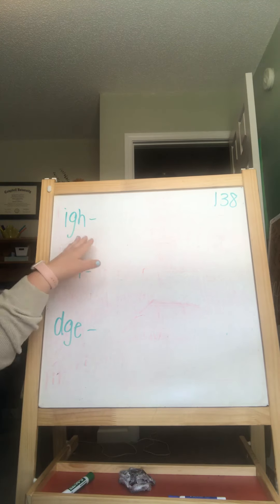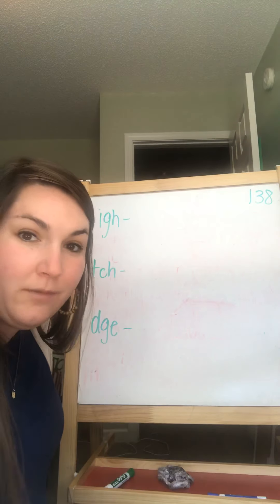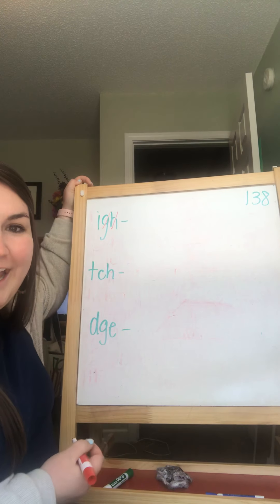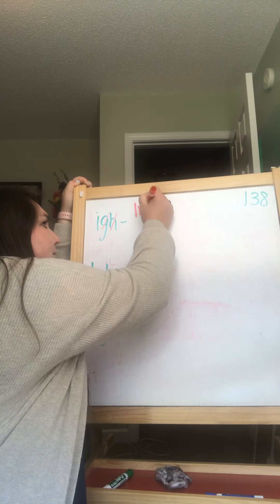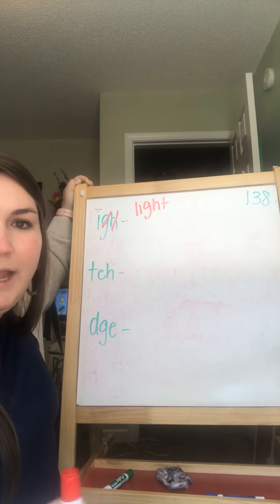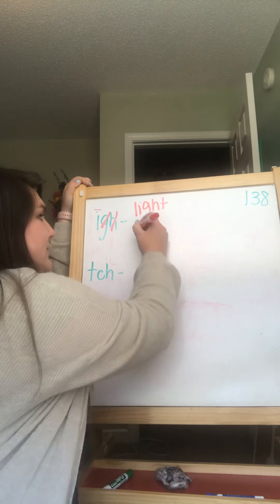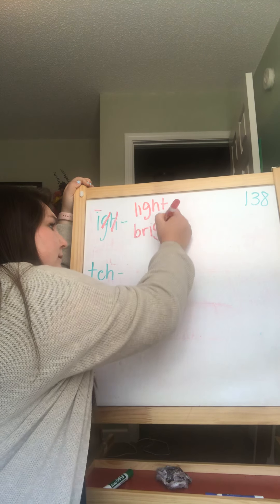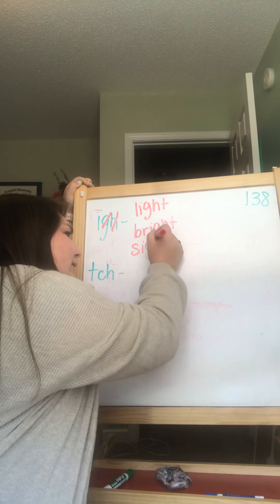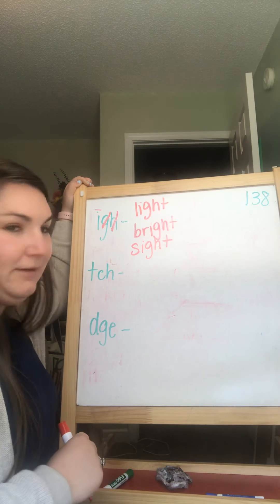We have triagraph I-G-H. What is a word that we know that has I-G-H in it? We know one from our card — triagraph I-G-H says I like light. That G and H are silent; that's why I've marked those out. That's how we code those. So I've got light. Who knows another one? What about bright? Sight. There are many, many words. So right now, go ahead and create two more and write them down. When you're ready, push play and then we'll keep going.